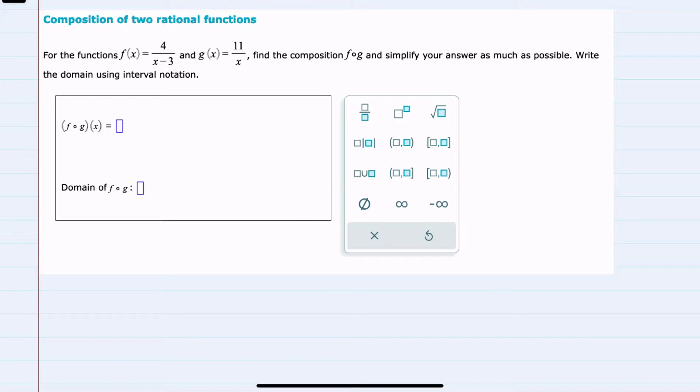In this video, I'll be helping you with the Alex problem type called composition of two rational functions. Our two functions here are f, which is 4 over x minus 3, and g, which is 11 over x. And we're asked to find both f of g and the domain of f of g.